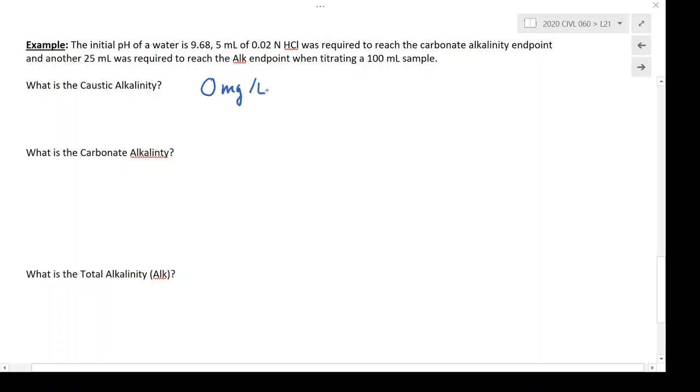because our pH is less than the caustic alkalinity endpoint, which is typically about 10.8, somewhere around there. And so it's going to be 0, so we'll have no caustic alkalinity because we're starting out below that endpoint. Next we'll solve for the carbonate alkalinity, and for this we're going to use the equation